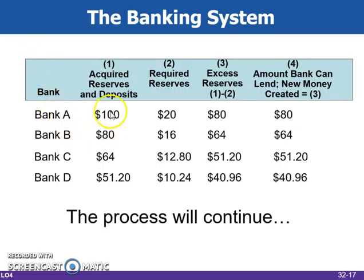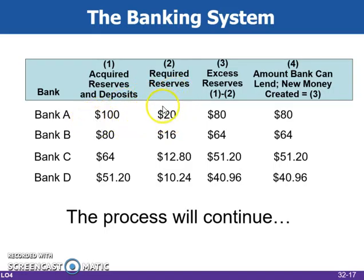Bank A with the initial $100 deposit must keep $20 of that $100 on hand because of the 20% required reserve ratio. Therefore, they can lend out the $80.